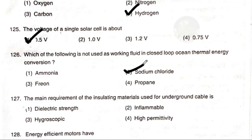The main requirement of the insulating material used for underground cable is: option 1 high dielectric strength, option 2 infallible, option 3 hygroscopic, option 4 high permeability. The answer is option 1 — high dielectric strength. High dielectric strength is the main requirement for underground cable insulating material.